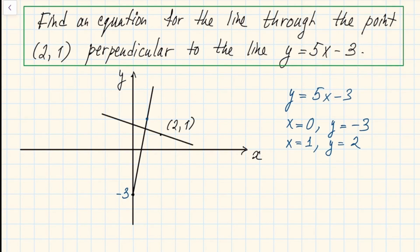The angle between the two lines will be 90 degrees, so they will be perpendicular to each other. The equation for the new line is y equals mx plus b, and we want to find m and b.